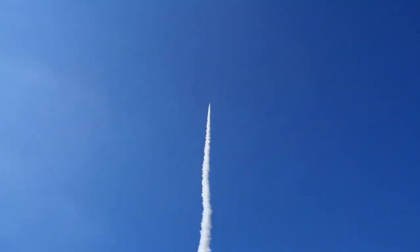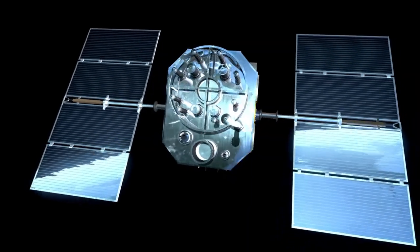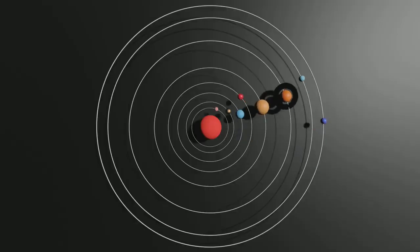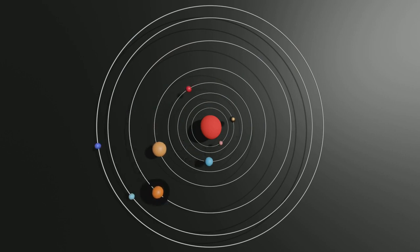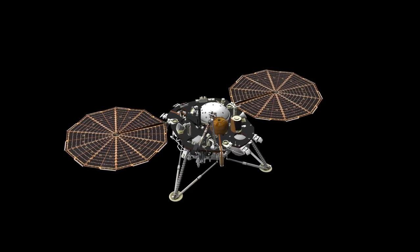In 1981, Voyager 2 approached Saturn, following the path of its sister craft, but this time armed with insights from Voyager 1. It dove deeper into the planet's mysteries. The spacecraft revealed that Saturn's rings weren't static or uniform, but dynamic and intricate, with kinks, braids, and swirling particles defying expectations.